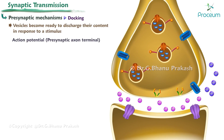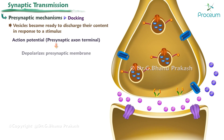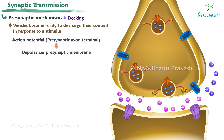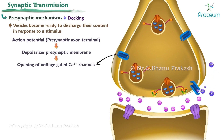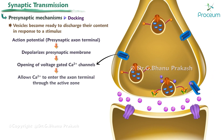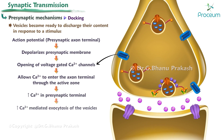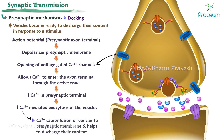The action potential that arrives at the presynaptic axon terminal depolarizes the presynaptic membrane. Depolarization of the membrane causes opening of voltage-gated calcium channels, allowing calcium to enter the axon terminal through the active zone. Increasing calcium concentration in the presynaptic terminal increases calcium-mediated exocytosis of vesicles, causing fusion of vesicles to the presynaptic membrane and discharge of their content into the cleft.